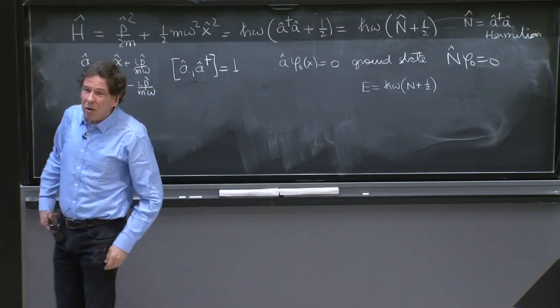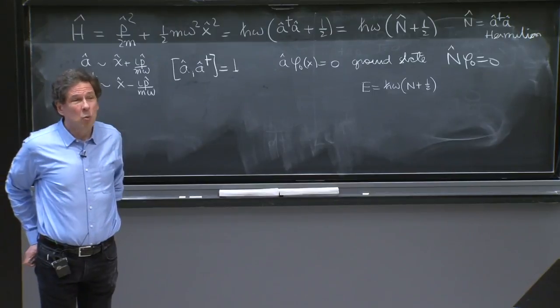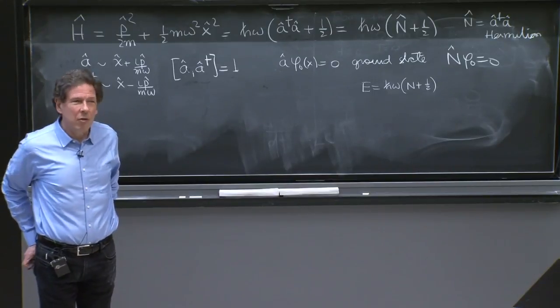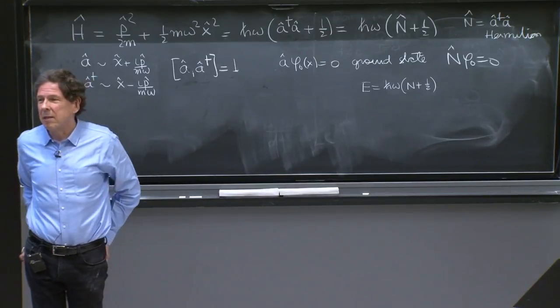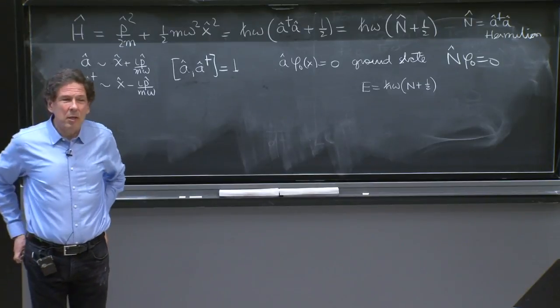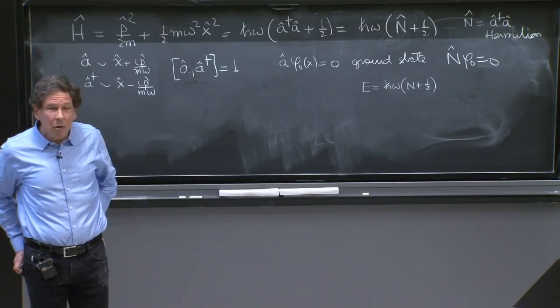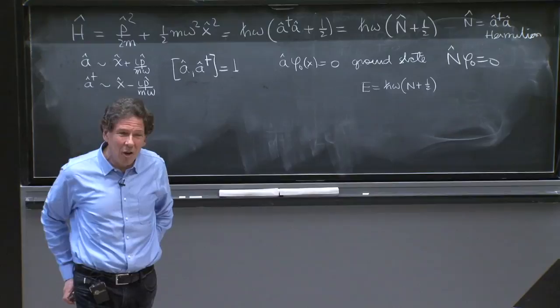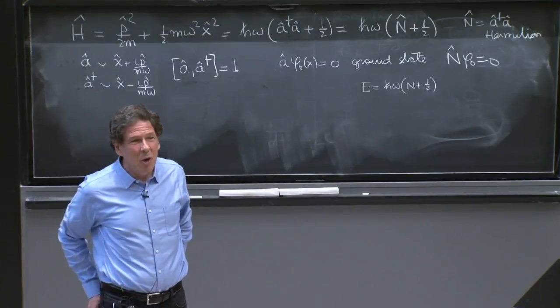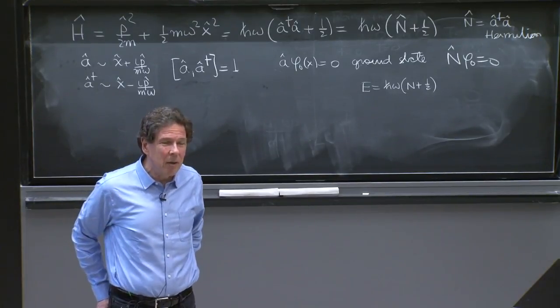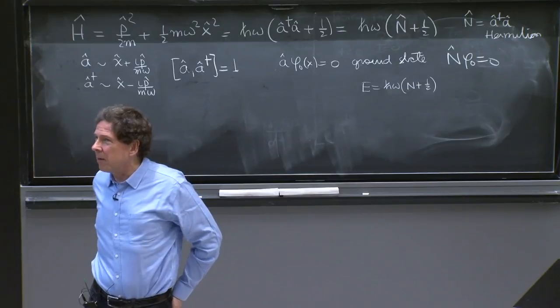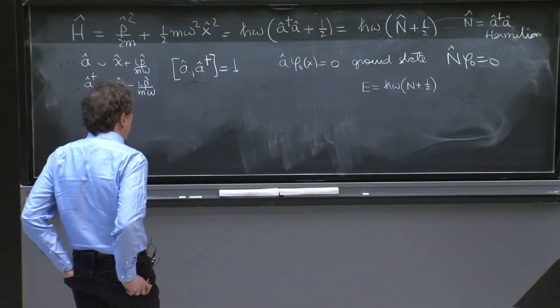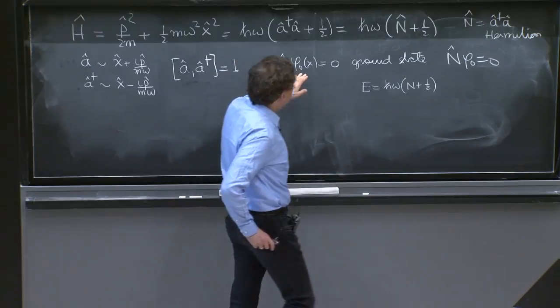And it's a first order differential equation, and therefore it has just one solution, and therefore there is just one ground state. And it's a bound state. And of course, you wouldn't expect more than one ground state, because there's no degeneracies in the bound state spectrum of a one-dimensional potential. So we found one ground state was phi 0.